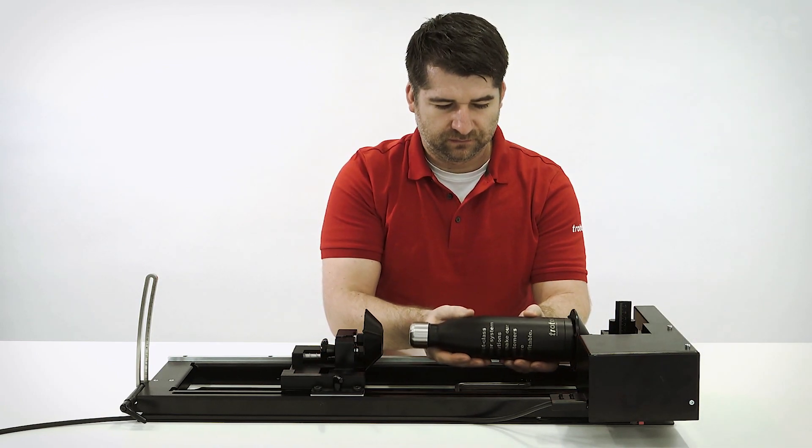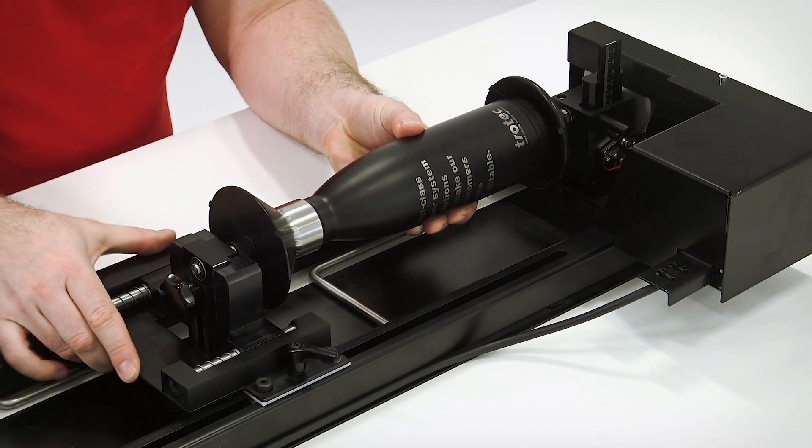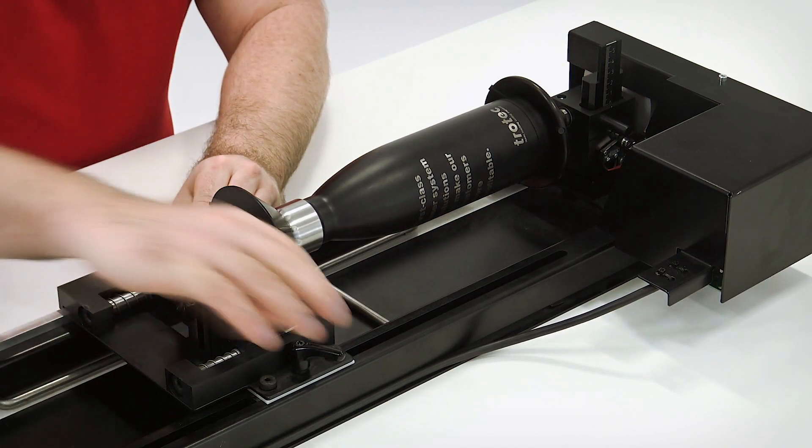Place a cylindrical object, in this case a bottle, then push the movable cone towards it. Once it sits properly, tighten the lever.